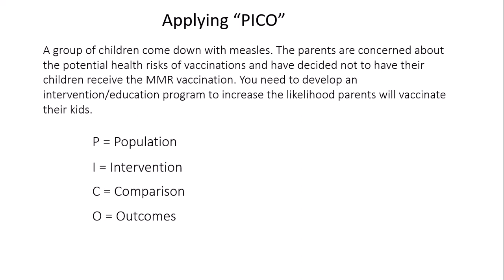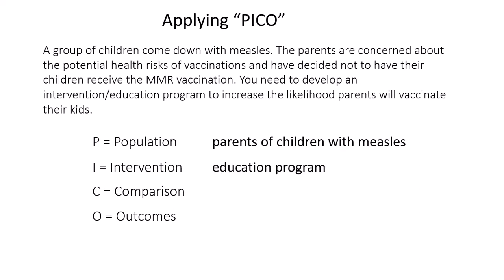Let's apply PICO to a public health scenario. A group of children come down with the measles. The parents are concerned about the health risks of vaccinations and decide not to have their children receive the MMR vaccine. You need to develop an education program to increase the likelihood that those parents will vaccinate their kids. So the P population is going to be parents of children with measles, and the I intervention is the education program.